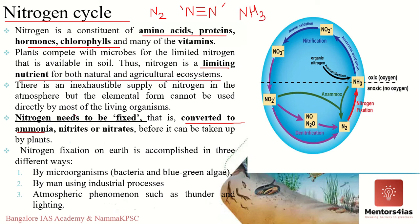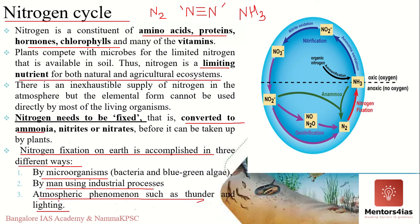Nitrogen fixation on Earth is accomplished in three different ways: fixation by microorganisms, by man using industrial processes, and by atmospheric phenomena such as thunder and lightning. We'll discuss more about this as we go on with our discussion of the nitrogen cycle.